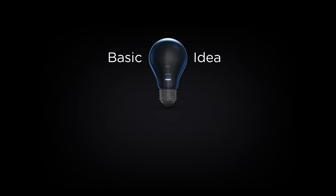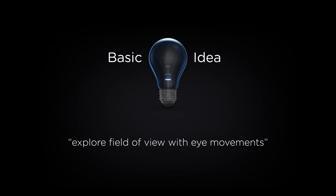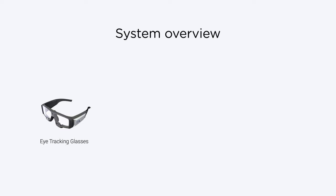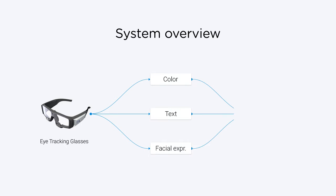The idea of this work is to give blind and visually impaired people the ability to explore their field of view just by moving their eyes. In order to do that, we implemented a system capable of converting colors, text, and facial expressions at the current gaze point of the user into sounds. We will now show the details of each module from our sonification system.